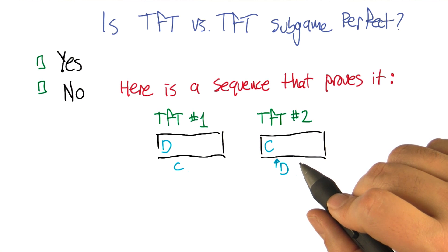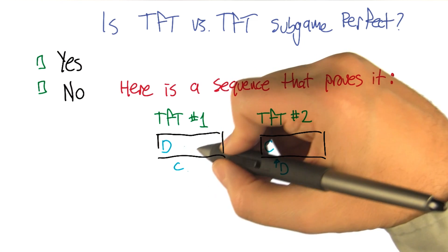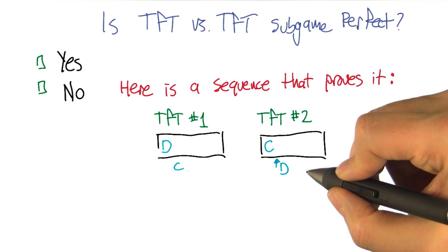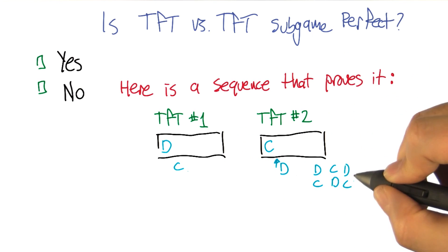Well, what's going to happen at that point is it's going to keep alternating. That's exactly right. So it's going to get the rewards corresponding to D versus C, C versus D, D versus C, C versus D, over and over again.